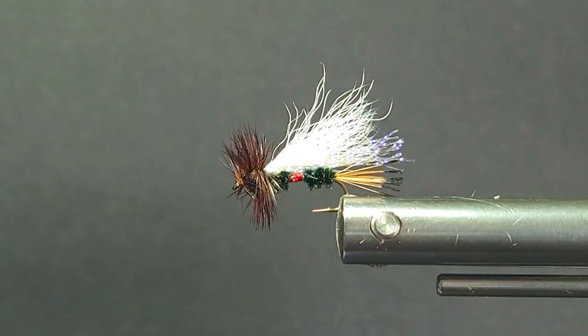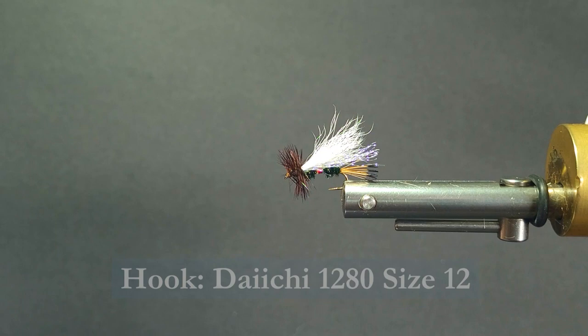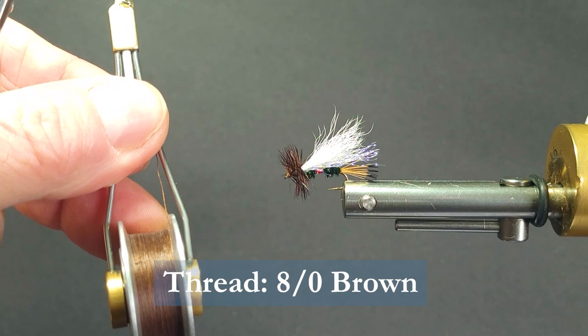I'm going to be using a 2x long. This is a Daiichi 1280 size 12. You can tie this in a few sizes. It works great. I'm going to be using some brown 8-0 thread. For the tail, I'm going to be using some golden pheasant tippets.